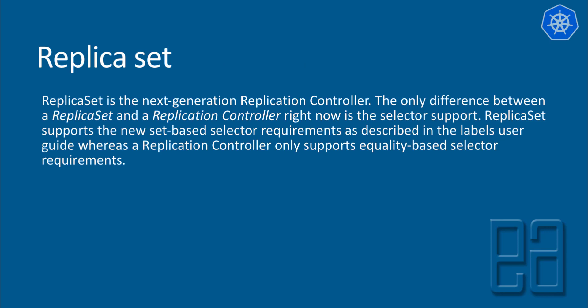There is also something called a replica set, which is the next generation of replication controller. The only difference between the replica set and the replication controller right now is the selector support. There is a keyword called selector you can use within the YAML file, and it supports set-based selector requirements as described in the label user guide, whereas the replication controller only supports equality-based selector requirements.